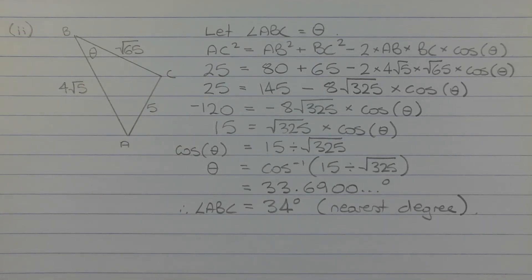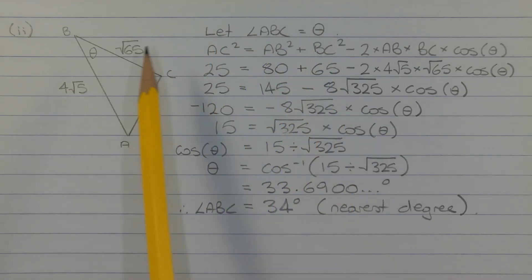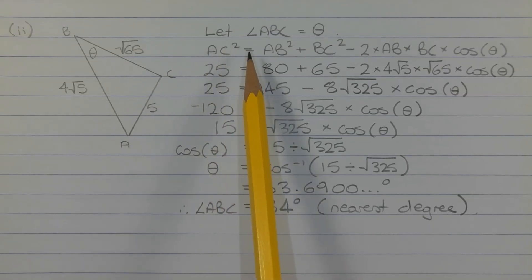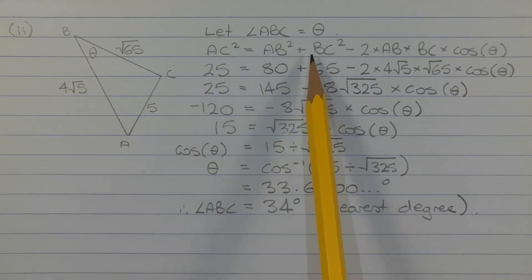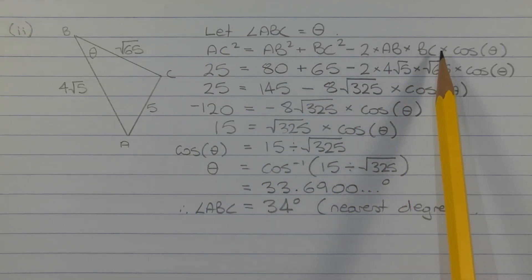So the cosine rule will need to be used. We can rearrange the cosine rule to make cos theta the subject and then proceed to find the size of angle theta by using the inverse cos function. Let angle ABC equal theta — that's this angle here. So AC squared is equal to AB squared plus BC squared minus 2 times AB times BC times cos theta.